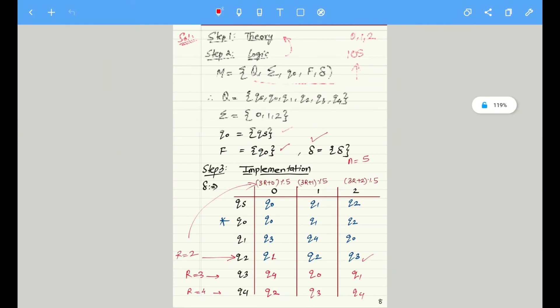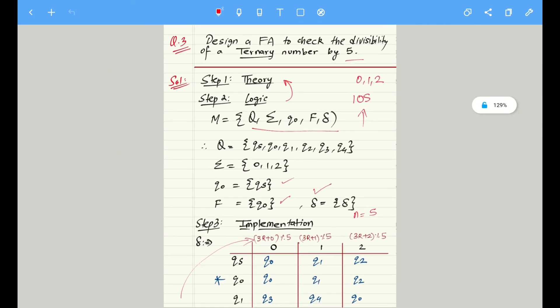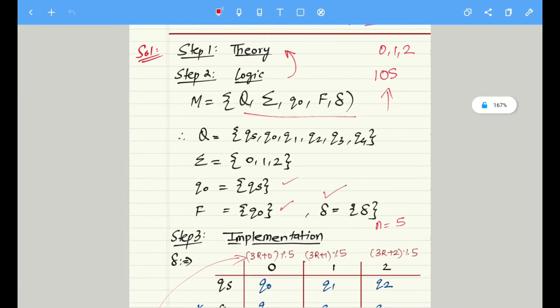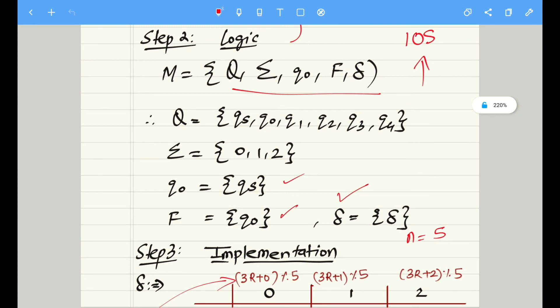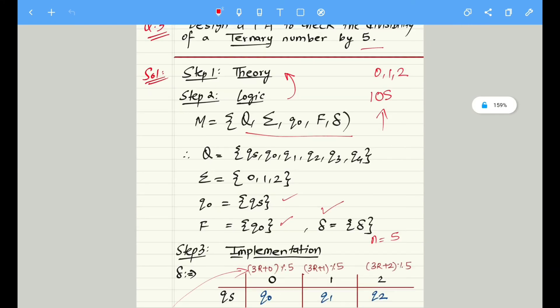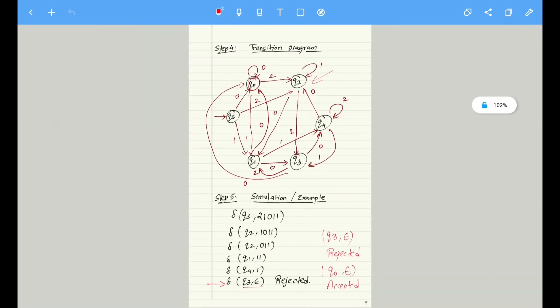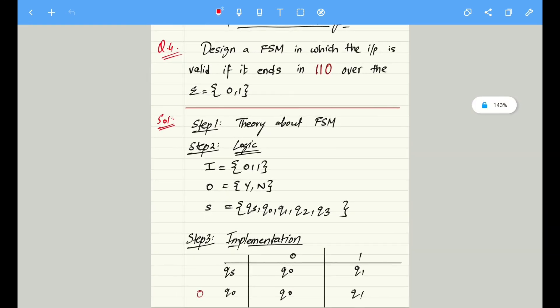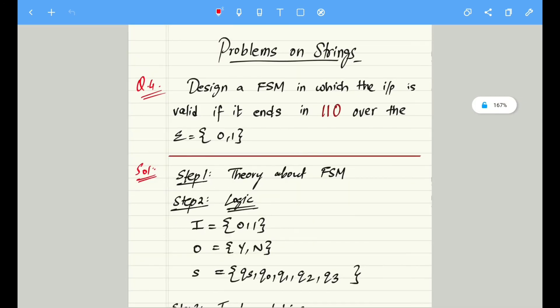So this is how we solve a problem - design a finite automata which is basically used to check the divisibility of a ternary number by 5. This problem was intentionally taken to just show the difference between how you have to proceed your problem if it is asked about FA or FSM. In the next video we are going to see a problem which is something like this: design FSM in which the input is valid if it ends in 110 over certain input 0, 1.